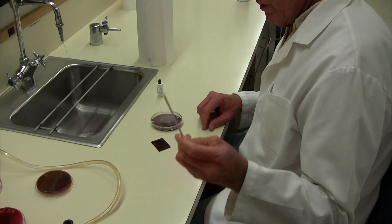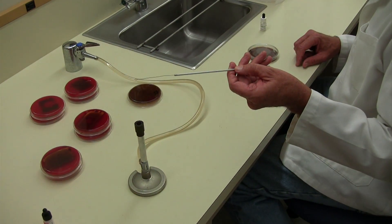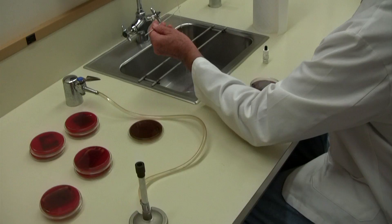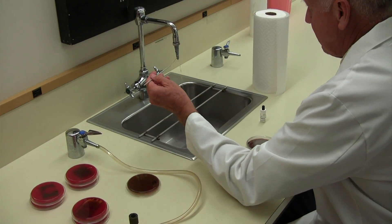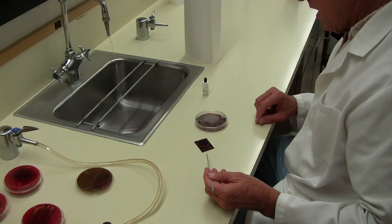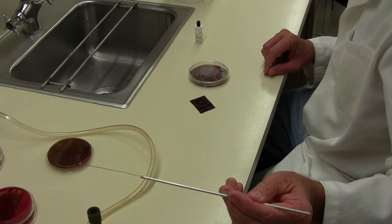What we're going to do is flame our loop, get a loop full of water, put it on the black slide, and then flame the loop again.